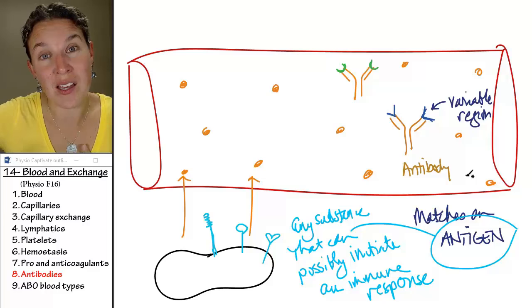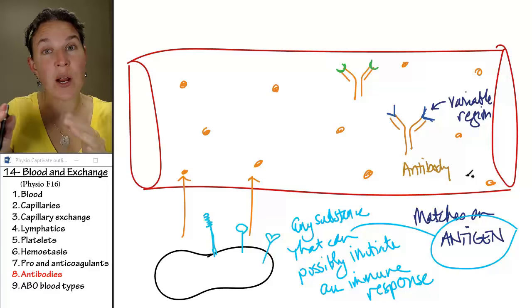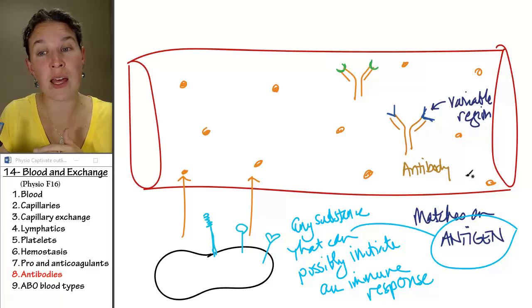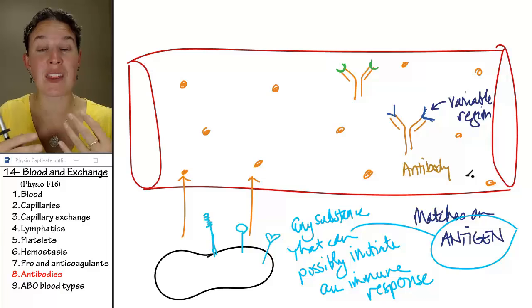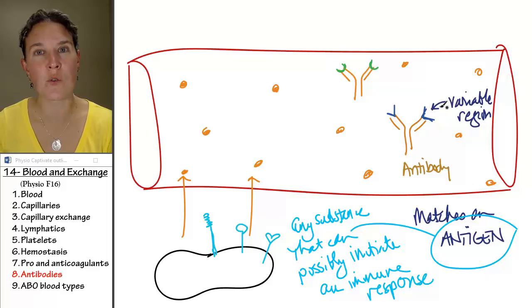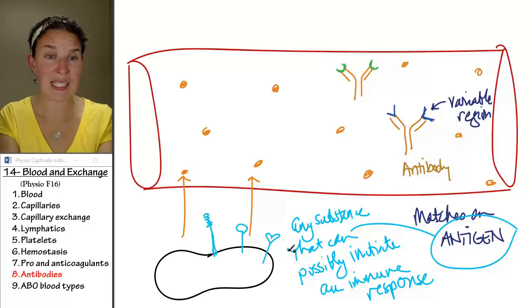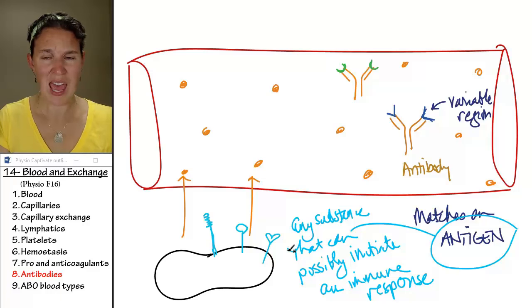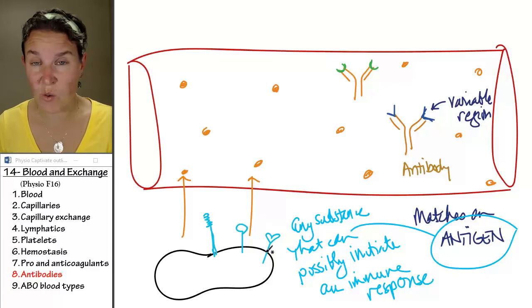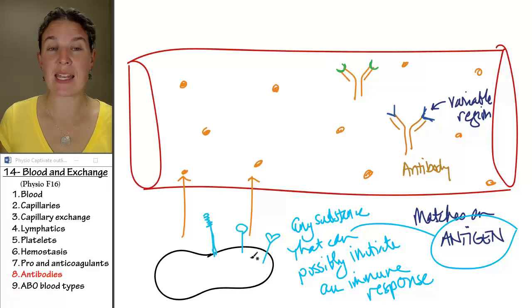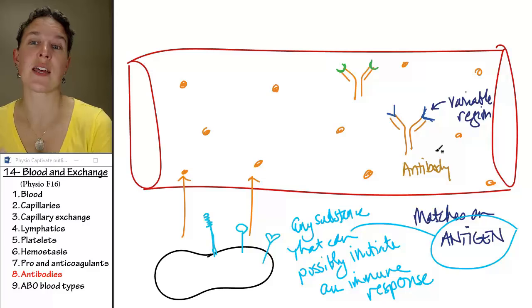So the antibody is the thing that is floating around in your blood. It's the protein that can bind to the antigen and possibly initiate the immune response. The variable region of the antibody matches to an antigen, and they're very specific. They will match to a specific pathogen or a specific molecule on a pathogen and initiate an immune response through the strategies that antibodies have.